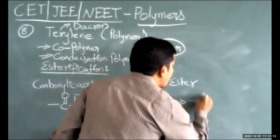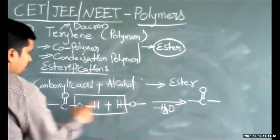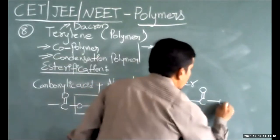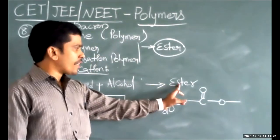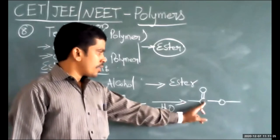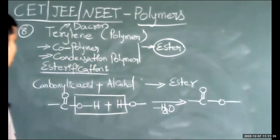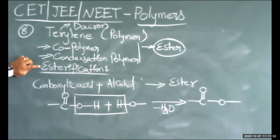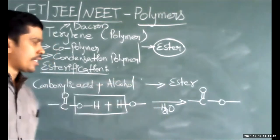When the water molecule is removed in this reaction, the product formed is -C(=O)-O-, which is the ester functional group. Formation of esters is called esterification, occurring when carboxylic acids react with alcohols.